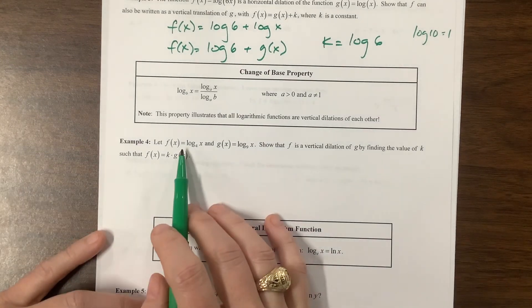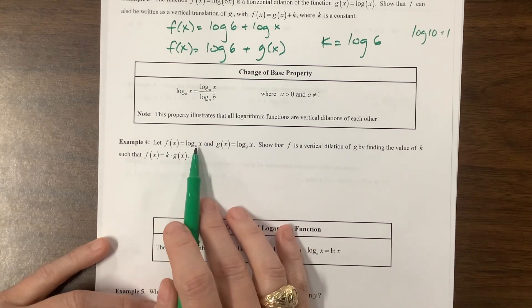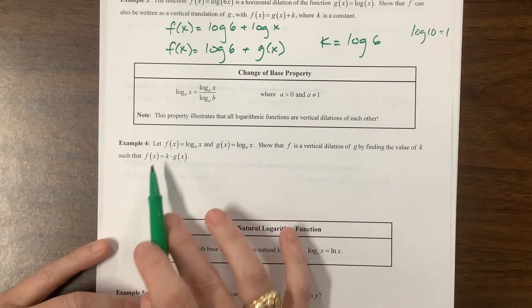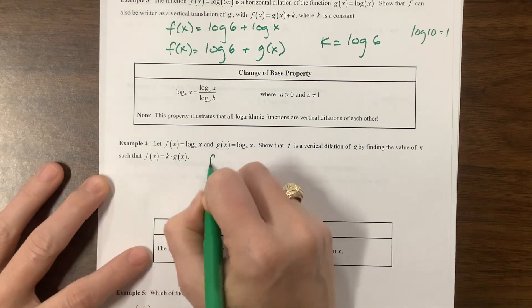So on this one, they're wanting us to show that f is a vertical. So here's f and here's g. So f is going to be equal to something times g. So let's look at f.